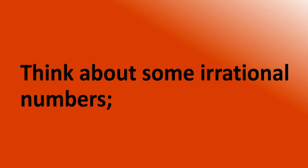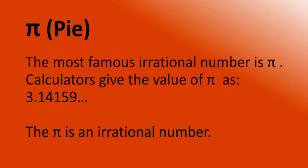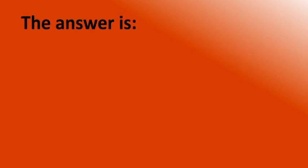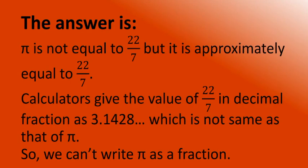Think about some irrational numbers. The most famous irrational number is pi. Calculators give the value of pi as 3.14159 and so on. Now, if pi is an irrational number, why do we use pi equals 22/7? Remember, we cannot express an irrational number in fractional form of integers, whereas 22/7 is a fraction of two integers, 22 and 7. The answer is: pi is not equal to 22/7 — it is only approximately equal to 22/7.